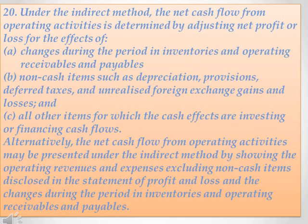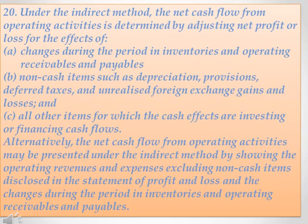Paragraph 20. Under the indirect method, the net cash flow from operating activities is determined by adjusting net profit or loss for the effects of: a. Changes during the period in inventories and operating receivables and payables; b. Non-cash items such as depreciation, provisions, deferred taxes, and unrealized foreign exchange gains and losses; and c. All other items for which the cash effects are investing or financing cash flows. Alternatively, the net cash flow from operating activities may be presented by showing the operating revenues and expenses excluding non-cash items disclosed in the Statement of Profit and Loss and the changes during the period in inventories and operating receivables and payables.